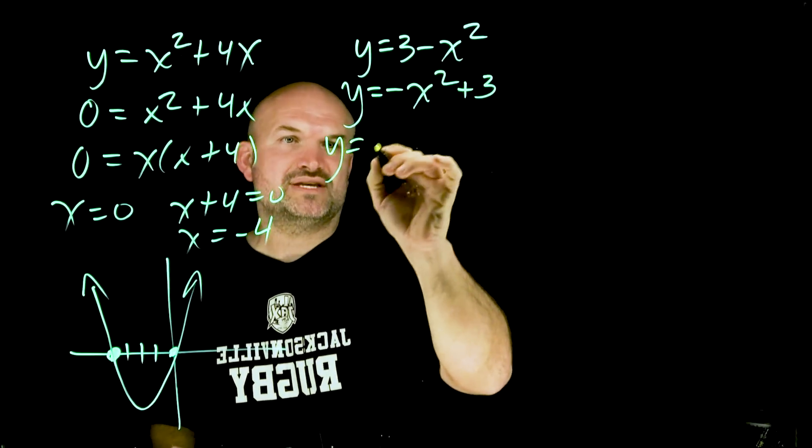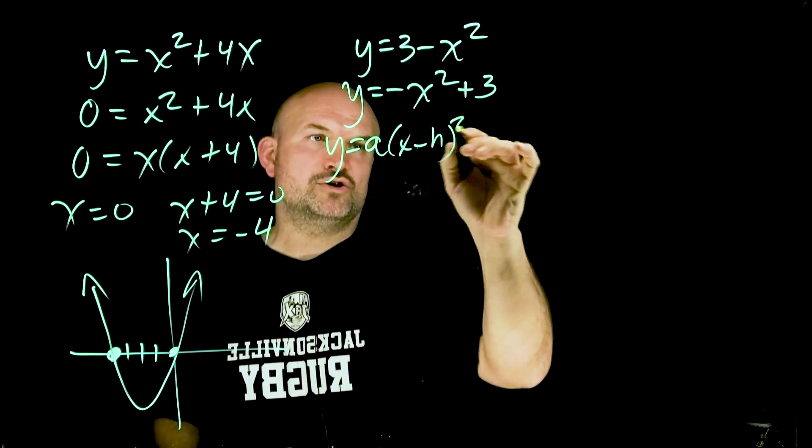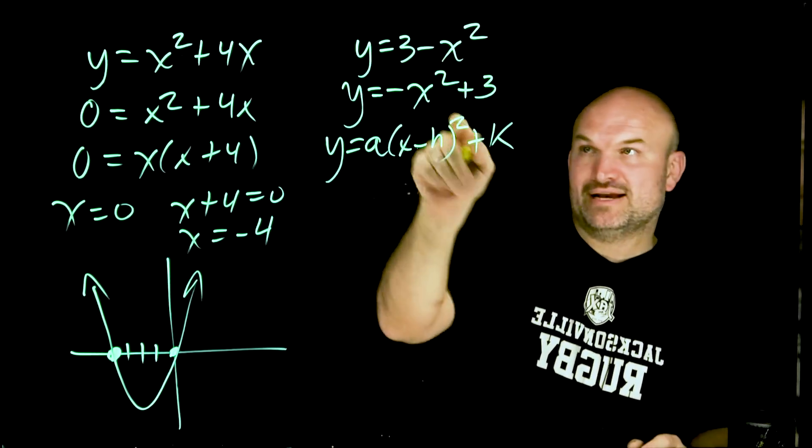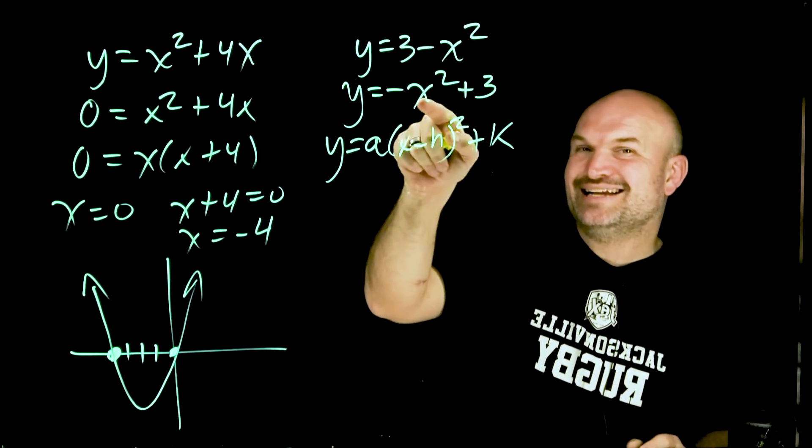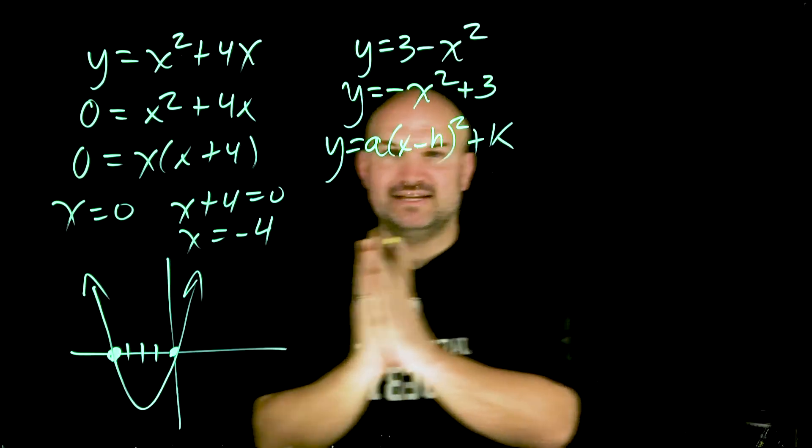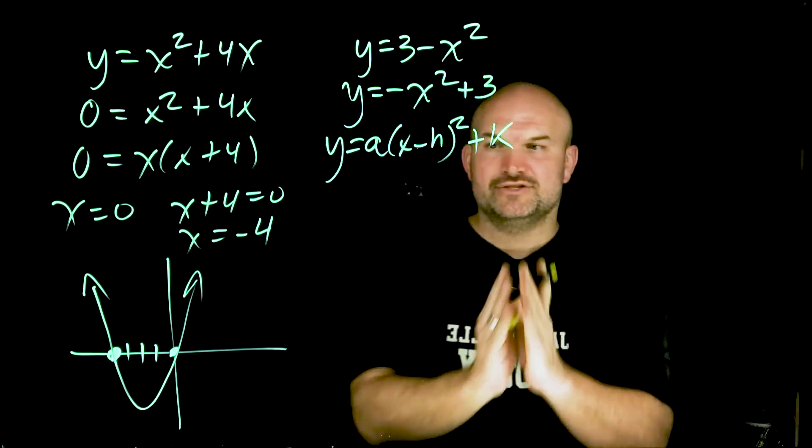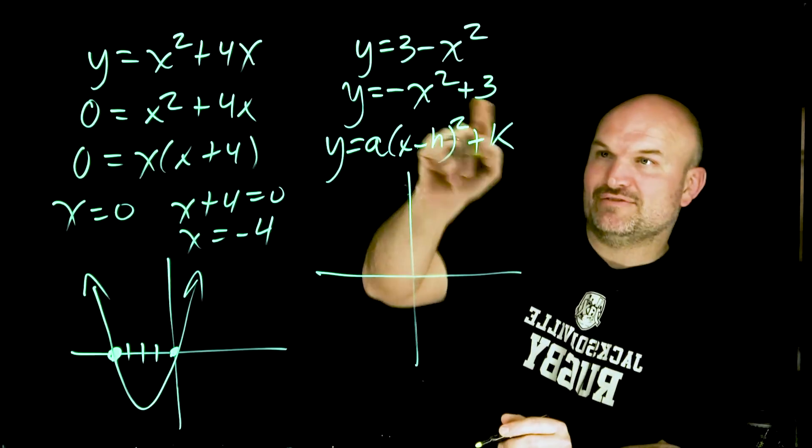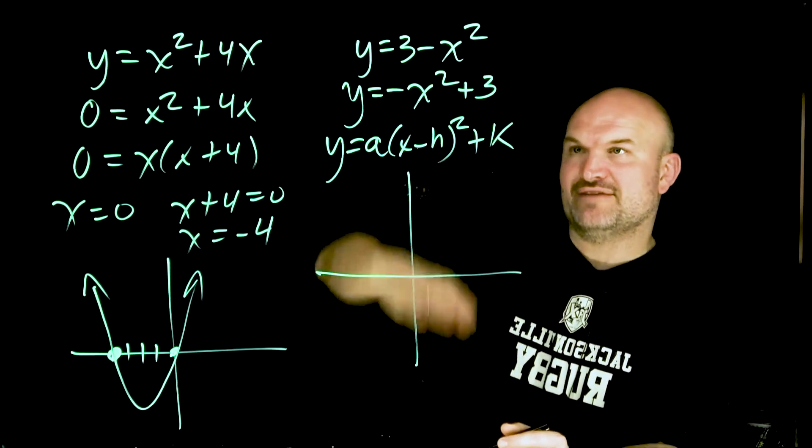Now, if you remember vertex form, vertex form looks like this: A times x minus h quantity squared plus k. Recognize my h here is zero, right? I'm not subtracting or adding anything to my x. So therefore, from vertex form, that means I'm not shifting anything left or right. So my graph is going to have a vertex on the y-axis.